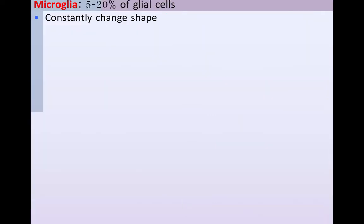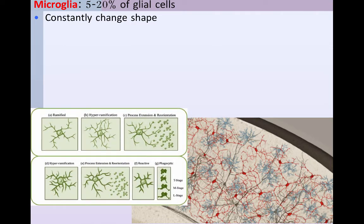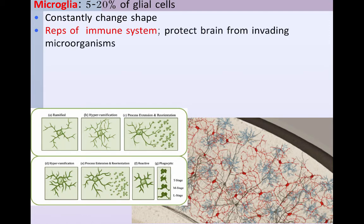Another type of glial cell is microglia. We believe microglia make up about 5 to 20 percent of all glial cells, and they change shape, which makes them harder to count. In figures where glial cells are shown in red, you can see their shapes are relatively constant at rest, but when they become active and have to attack things and phagocytize them, you can see that their shape actually changes and becomes different.